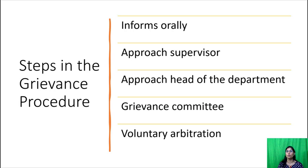If the department head fails to do so, or if the decision given is not acceptable to the worker, the worker can resort to the grievance committee, which comprises representatives of employers and employees. This committee shall communicate its recommendations to the manager within seven days of the grievance reaching it. If there are unanimous decisions, these shall be implemented by the management. In case unanimous decisions have not been arrived at, the views of the members shall be recorded and all relevant records placed before the manager for decision.